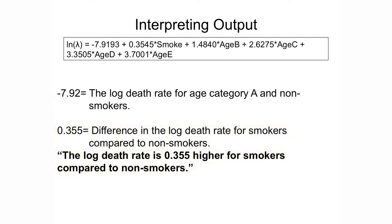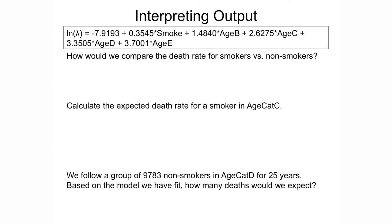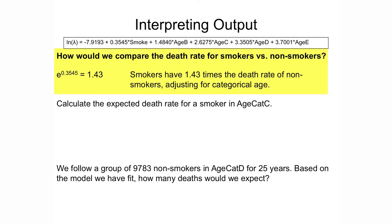One thing to note is that your output does not give you a value assigned to your offset. Remember that the offset is forced to have a coefficient of one, so you won't see anything about the offset in your Poisson regression output in R. When interpreting your output, you can interpret your findings as though you've modeled the log rate as a linear function of the x's. To compare the death rate for smokers versus non-smokers, we exponentiate the coefficient for smoke to get the rate ratio.